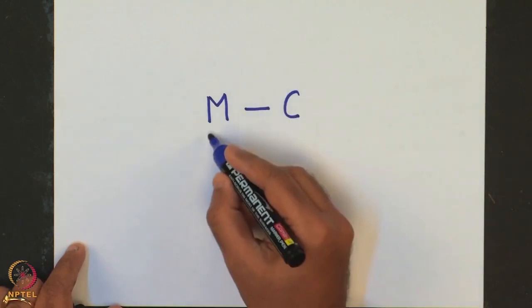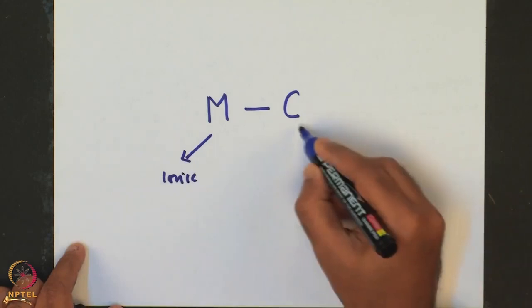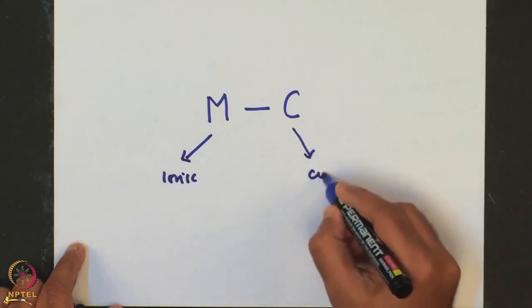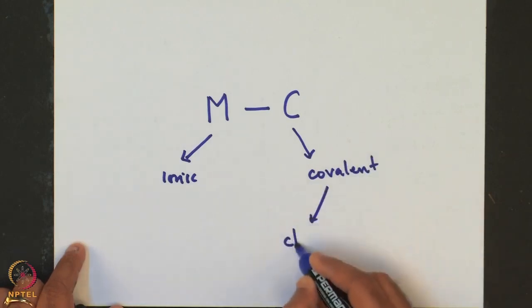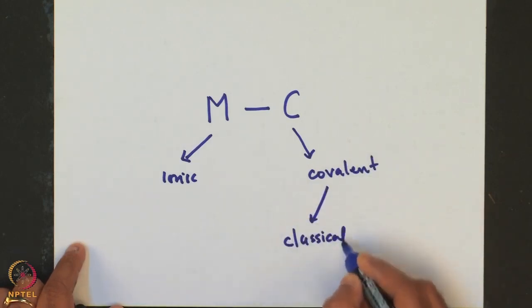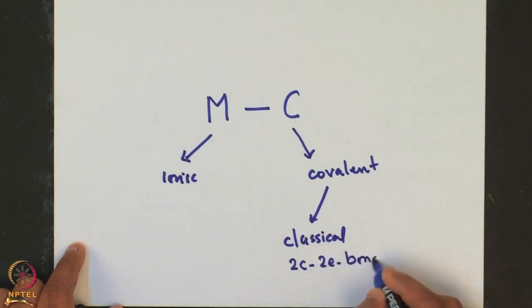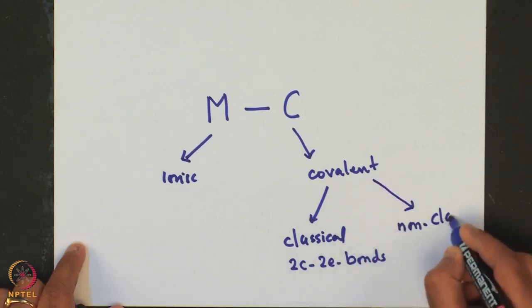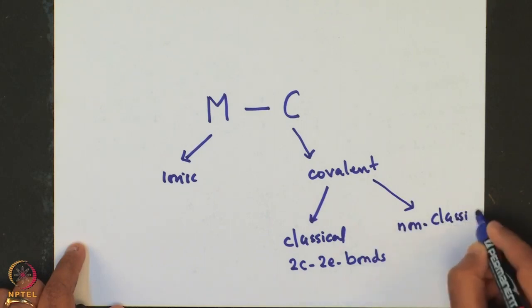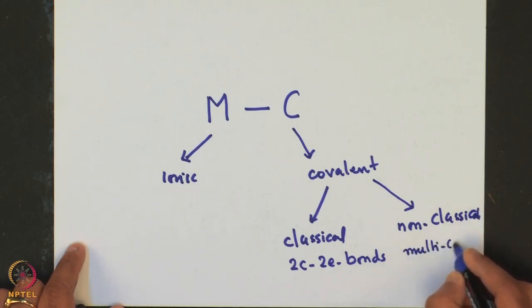Metal-carbon bonds can be ionic, can be covalent, can be classical two-centered two-electron bonds, can be non-classical multi-centered bonds.